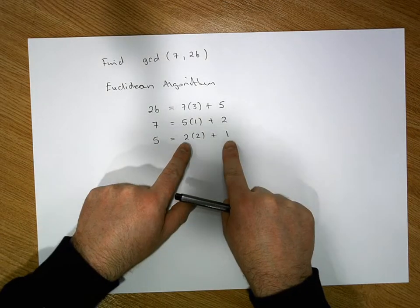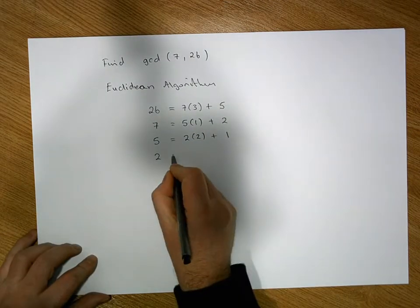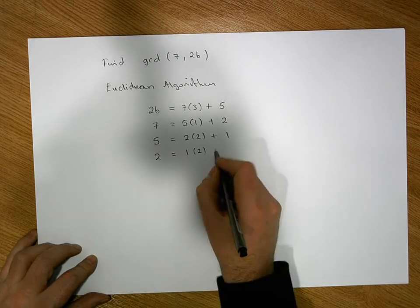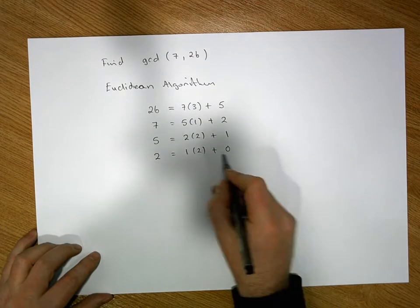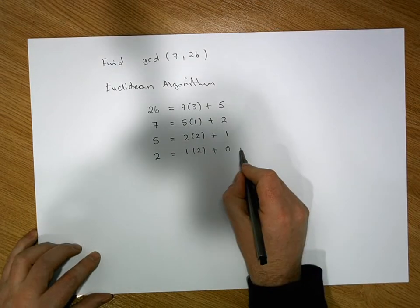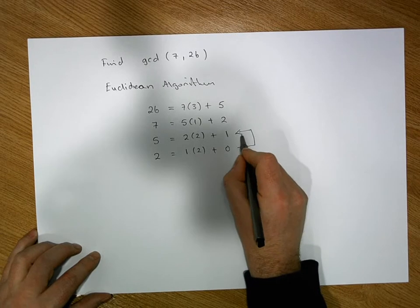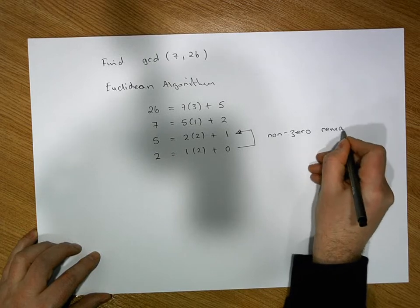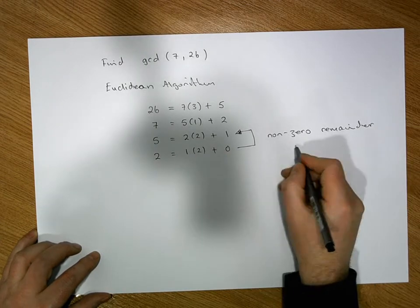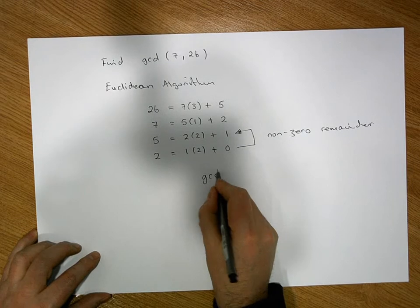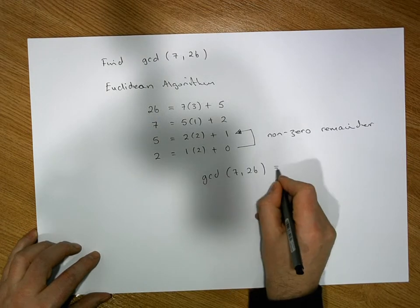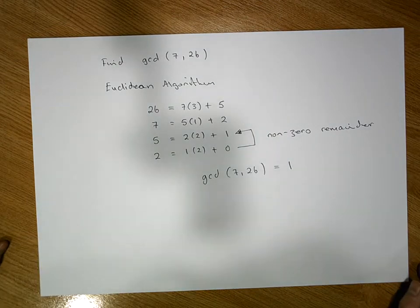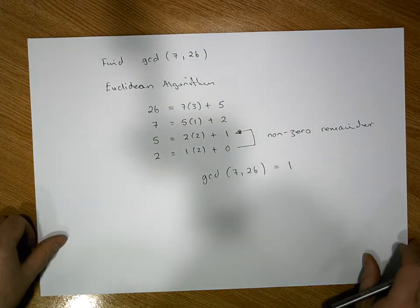We apply the division algorithm again: 2 is equal to 1 times 2 plus a remainder of 0. The greatest common divisor is the last non-zero remainder in this list. So the GCD of 7 and 26 is equal to 1. That's the Euclidean algorithm.